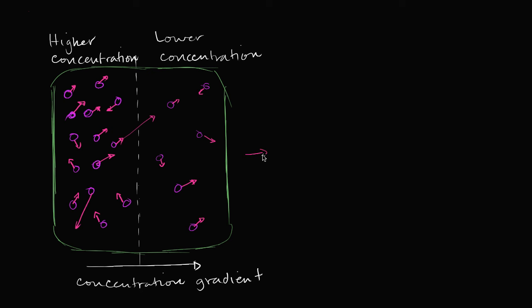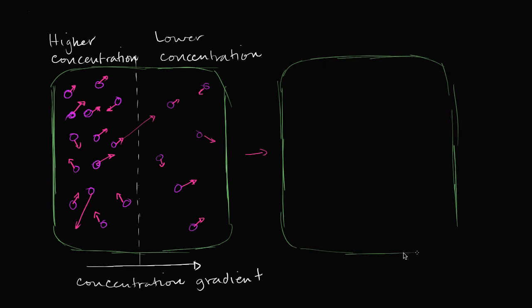As time goes on, if we let this system stabilize for a while, it should look something like this. Let me draw the molecules — I won't draw their actual velocity vectors. So if we wait a while, how many molecules did I have? I count 20 total.